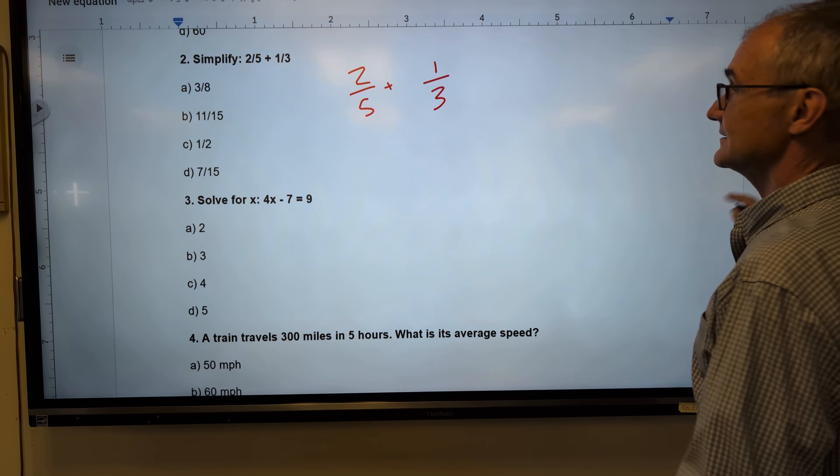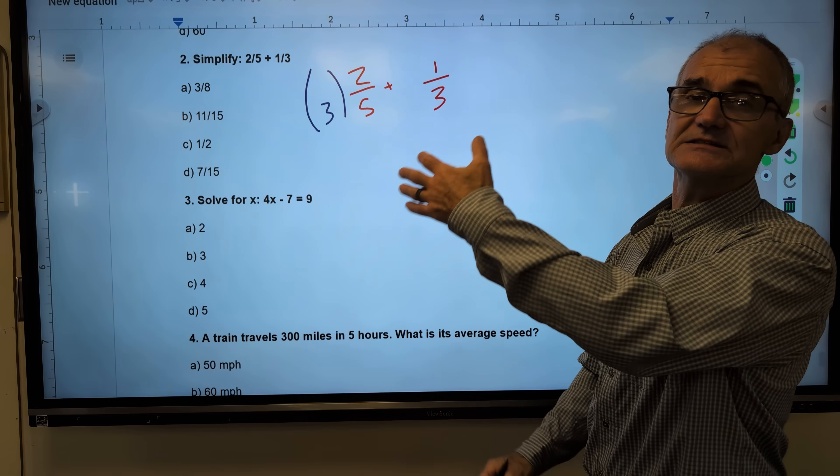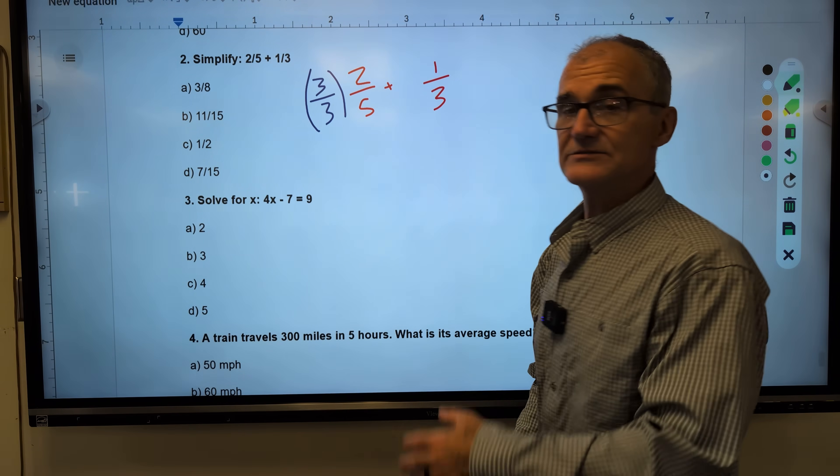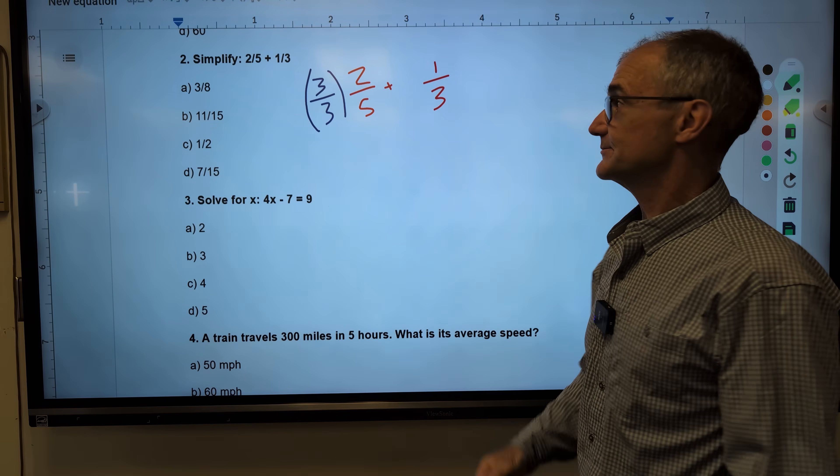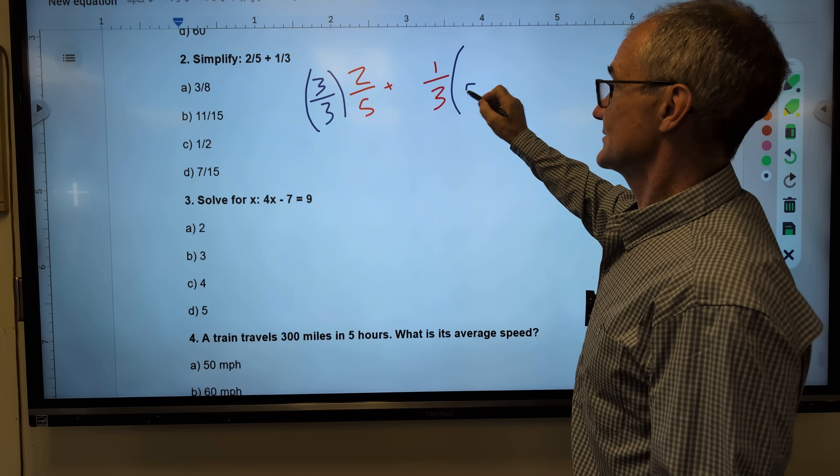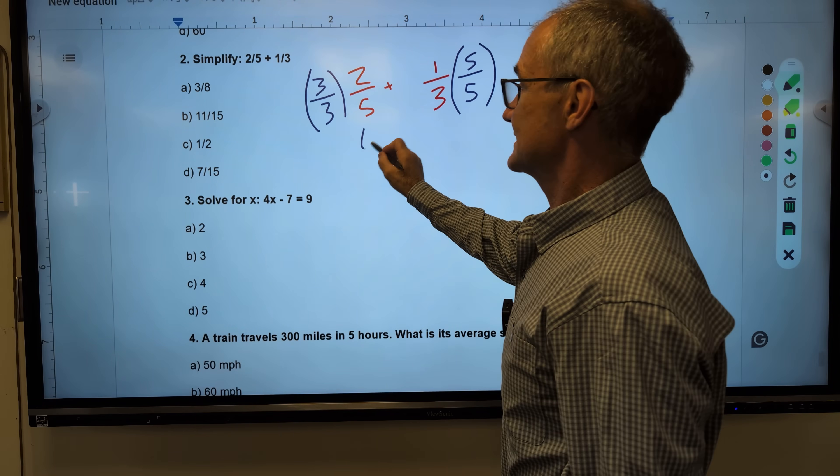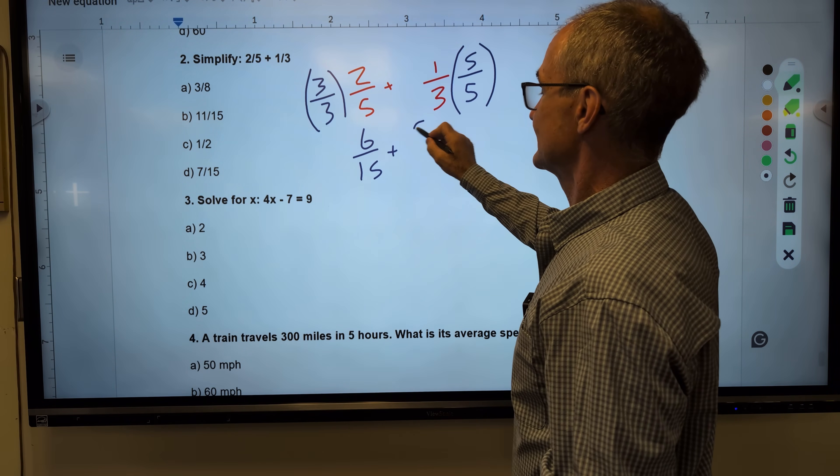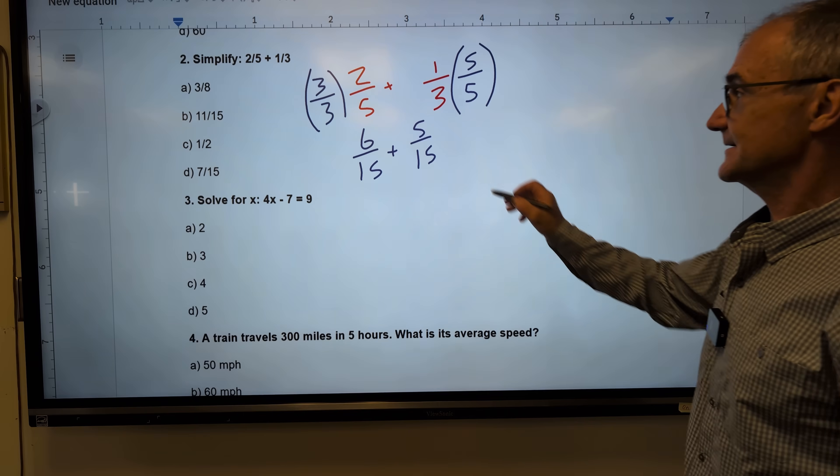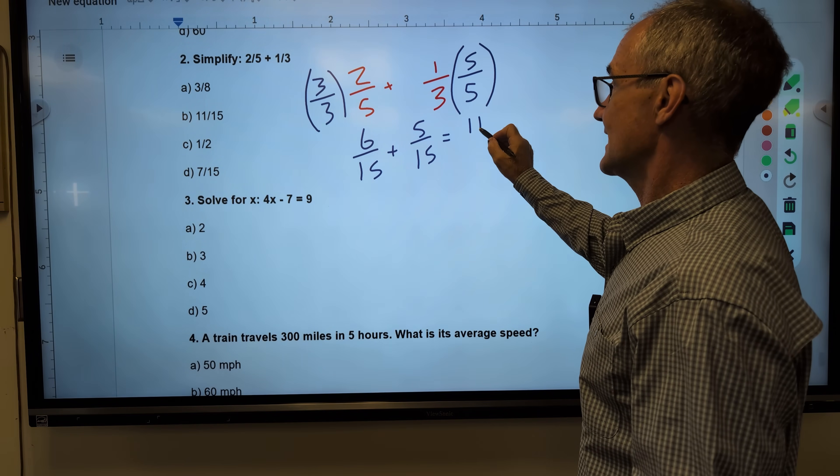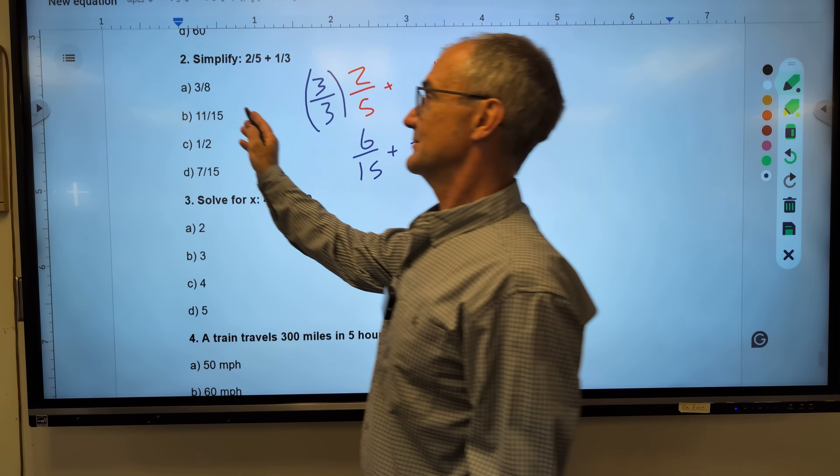So what I'm going to do here, to get this to a 15, I have to multiply it by a 3. I can't just multiply by 3. It'll change the value. I can only multiply by 1. So 3 over 3 is the equivalent of 1. It doesn't change the value, but it gives me a 15 in the bottom. Over here, I need a 15, so I multiply by a 5 over a 5. Again, that's 1. It doesn't change the value. That gives me 6 fifteenths plus 5 fifteenths. I now have that common denominator. The number on the bottom is the same. The rule is I add across the top, and I keep that bottom number. So the correct answer, 11 fifteenths, answer B right here.